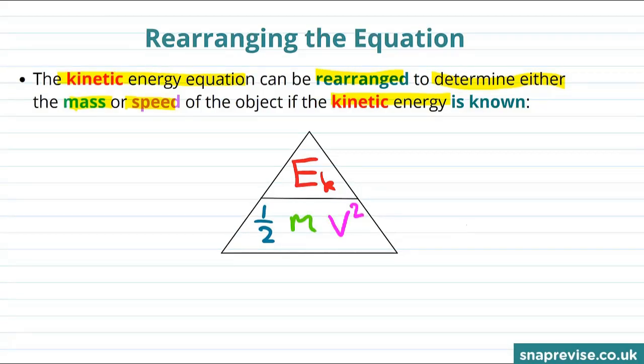We imagine that this line in the middle is like a dividing line. If we want to find out what the equation is for any one of the quantities we're interested in, we just imagine putting our thumb over that quantity and seeing what the triangle says.